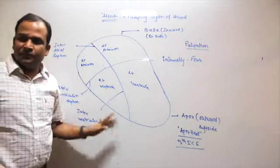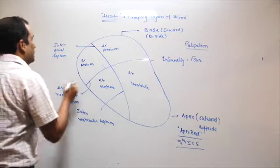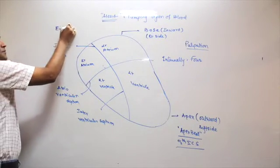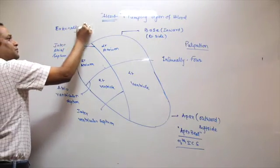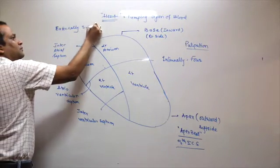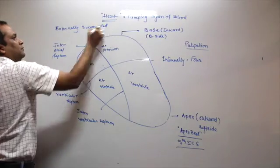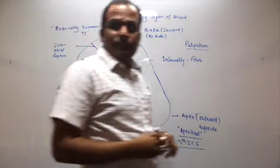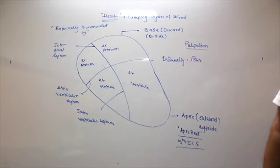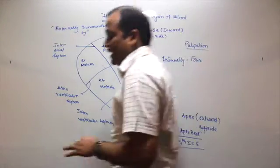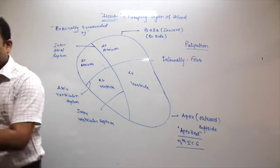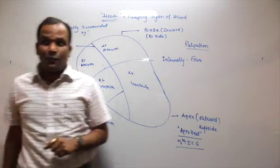This is the whole heart. Internally we have the atrium and chambers. Externally it is surrounded by a layer called pericardium.